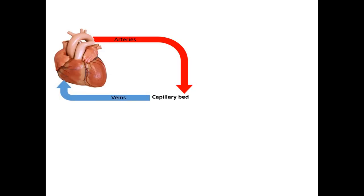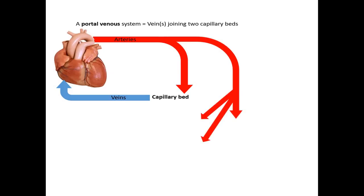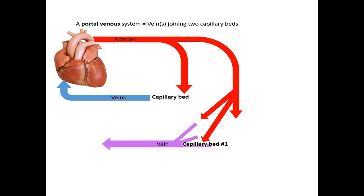In a portal system we have two capillary beds which are joined by veins. Again we have arteries supplying our first capillary bed. This is drained by veins, but instead of going back to the heart, the veins feed into a second capillary bed which is then drained by veins which return to the heart.